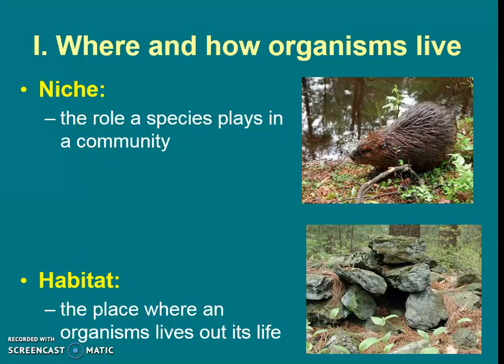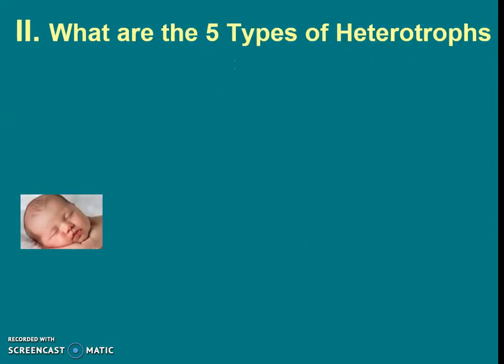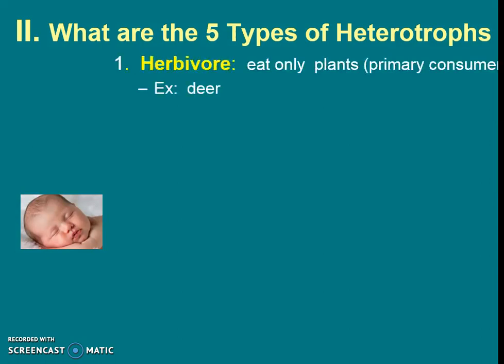Now we also need to know a lot of different major words for types of heterotrophs. Remember, heterotrophs are things that eat other things. We're going to list out these five things — in your notes these are in the form of a table. The first thing in your table is herbivore, which eats only plants and is a primary consumer. An example is a deer. Make sure you're either writing the definition, the example, or keywords to fill in your chart. Another example here is a qualmere.